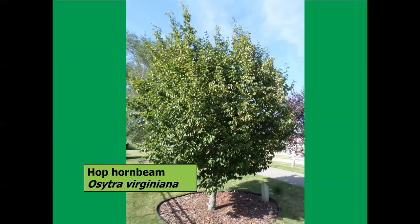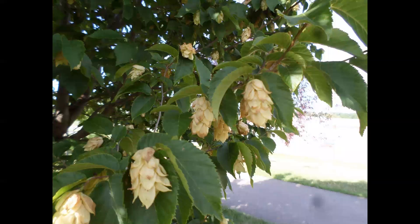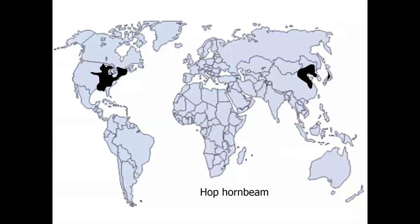Hop hornbeam — Ostrya virginiana — is another example. Small tree; not completely pest-free, as I recall in Lansing, Michigan, some were killed on stress sites as street trees attacked by the two-lined chestnut borer. Still a very interesting tree used as a small street tree in some locations, even in Brookings, South Dakota. I like the pods hanging down in clusters — kind of attractive. Not a real fall color, but it adds to the diversity of the landscape. There are some hop hornbeam species found in Asia — China, Japan, Korea — but still a fairly limited number of species on both continents.